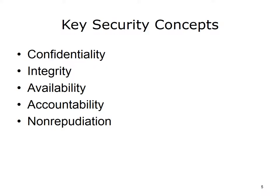There are five key concepts to understand when talking about information security. They are confidentiality, integrity, availability, accountability, and non-repudiation. Confidentiality, integrity, and availability are commonly referred to as the CIA of security.